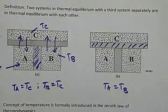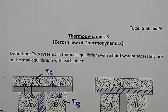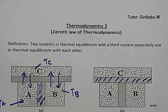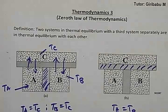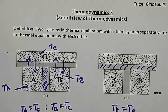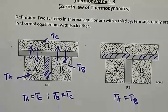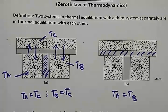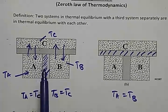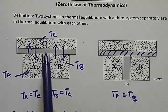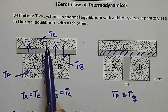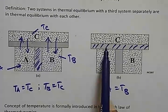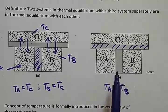Revisiting the definition: it is clear that two systems A and B are in thermal equilibrium with a third system C separately. We placed an adiabatic wall to isolate C, but A and B still maintained thermal equilibrium with each other. Even after isolating C, this relationship is preserved.